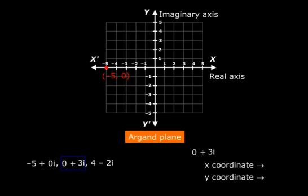What about the number 0 plus 3i? The real part, 0, that is the x coordinate. The imaginary part, 3, that is the y coordinate. So what is the point that we are talking about? 0 comma 3 and we can plot it like this.